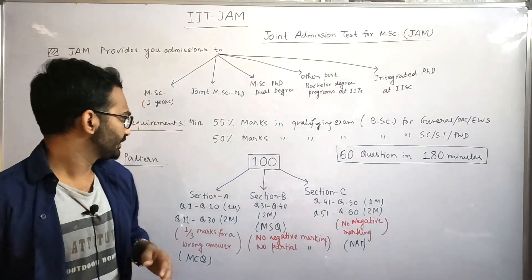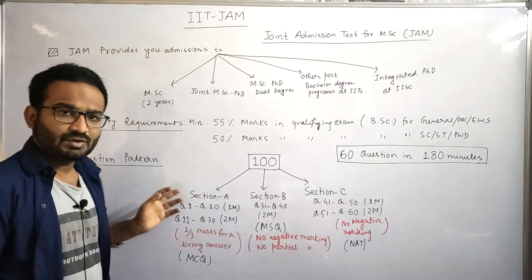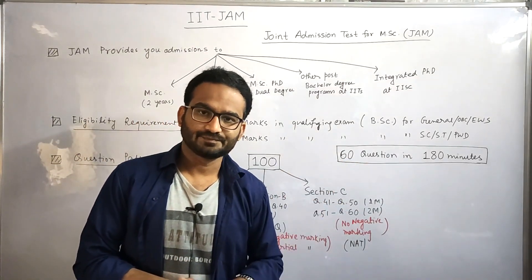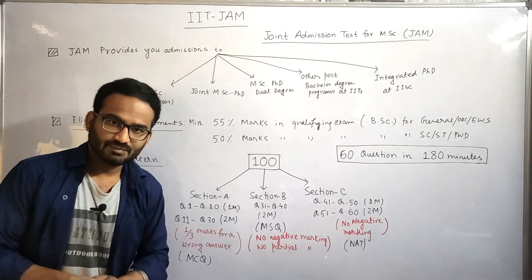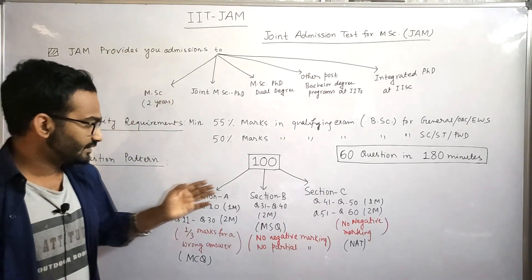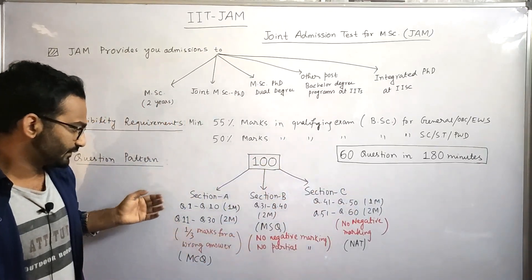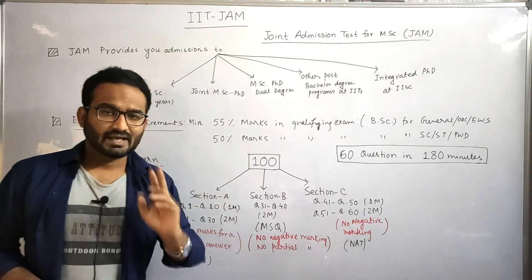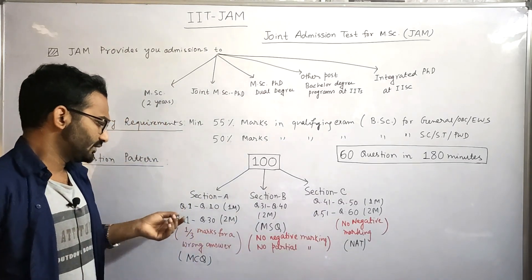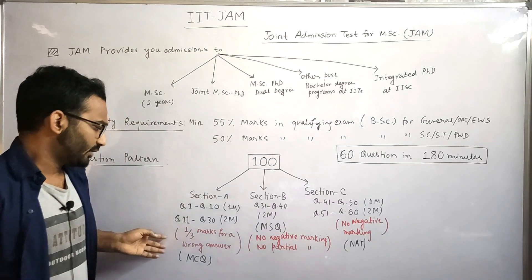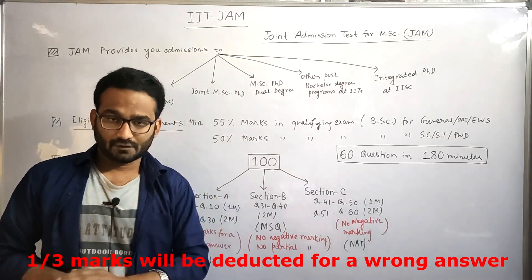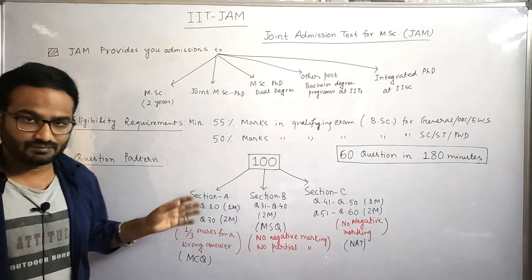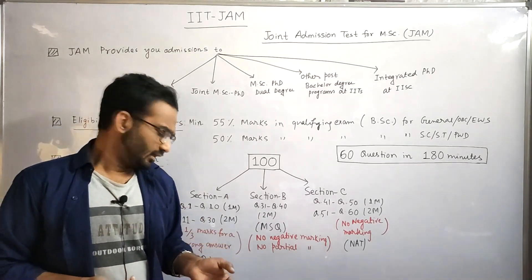Now let's talk about the exam pattern. The question paper consists of 100 marks and 60 questions. The paper is divided into three sections: Section A, B, and C. Section A comprises 30 questions — question numbers 1 to 10 are of one mark each, and question numbers 11 to 30 are of two marks each. One-third negative marking is applied for a wrong answer. The nature of Section A questions is MCQ type — four options with only one correct answer.